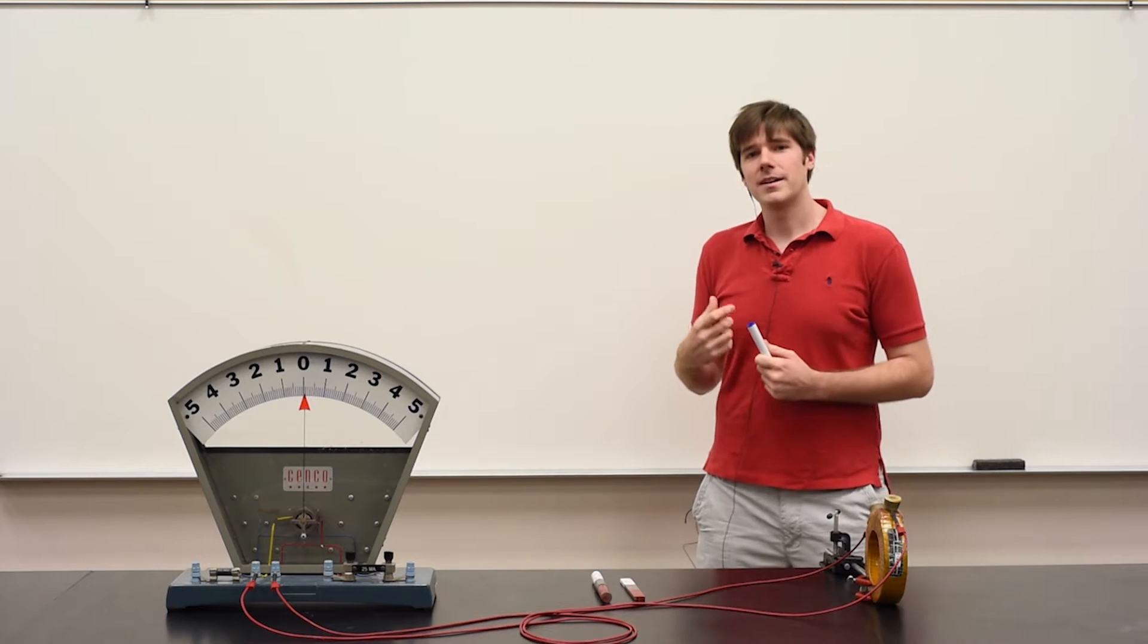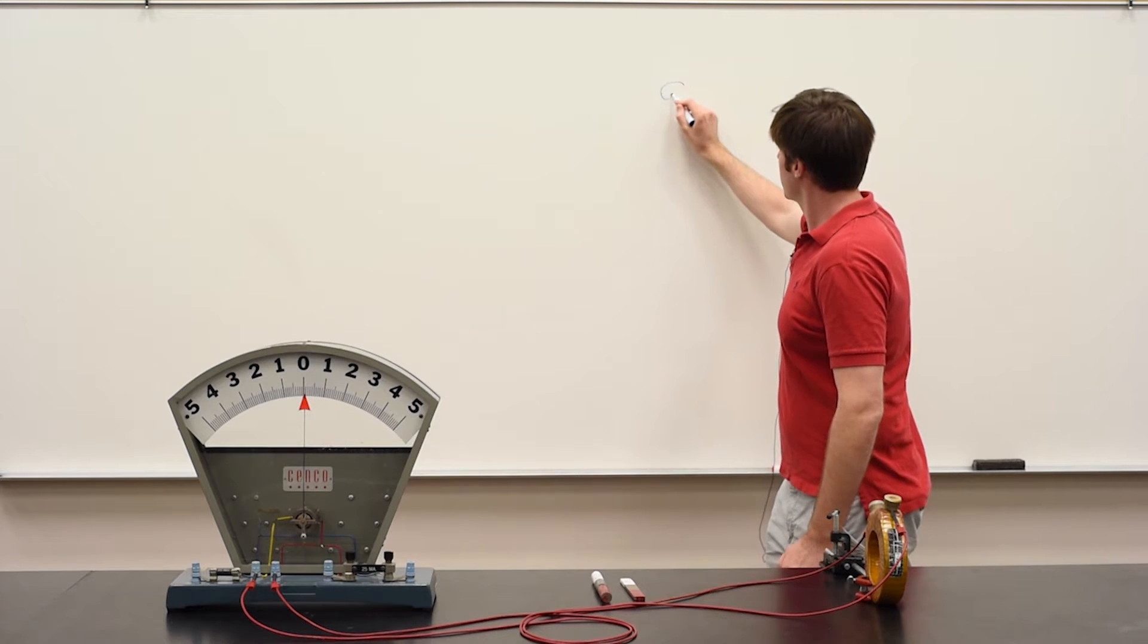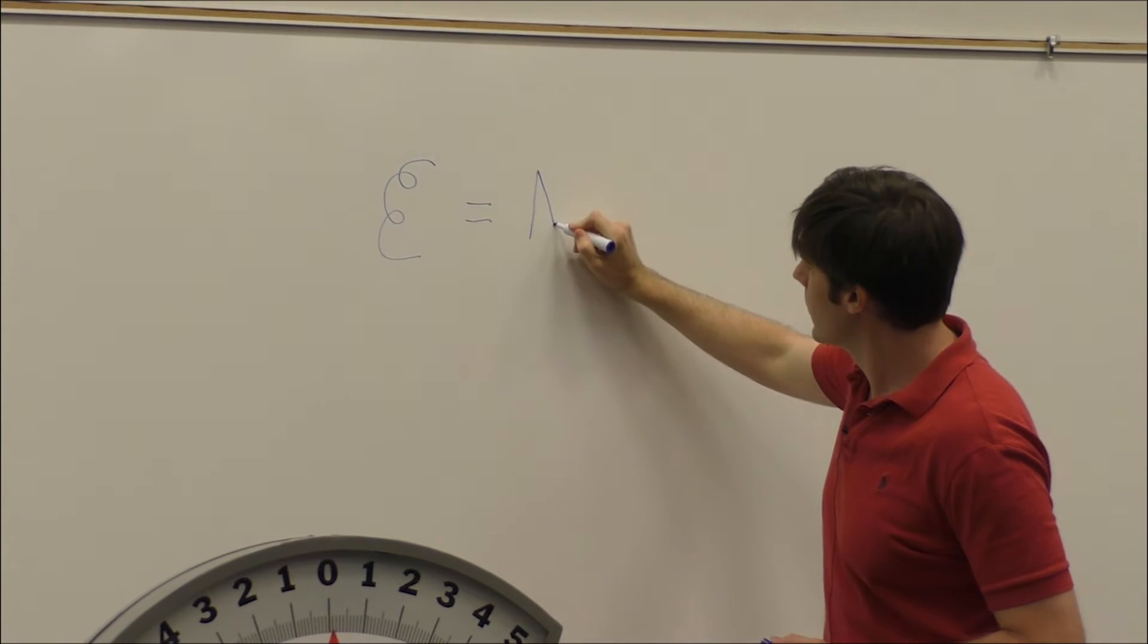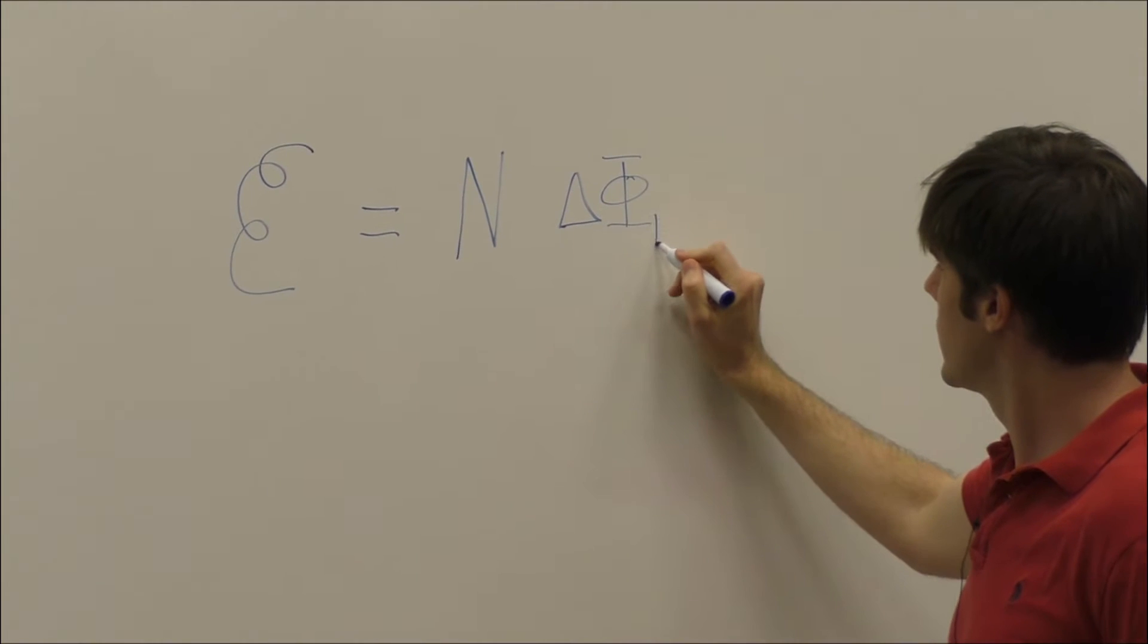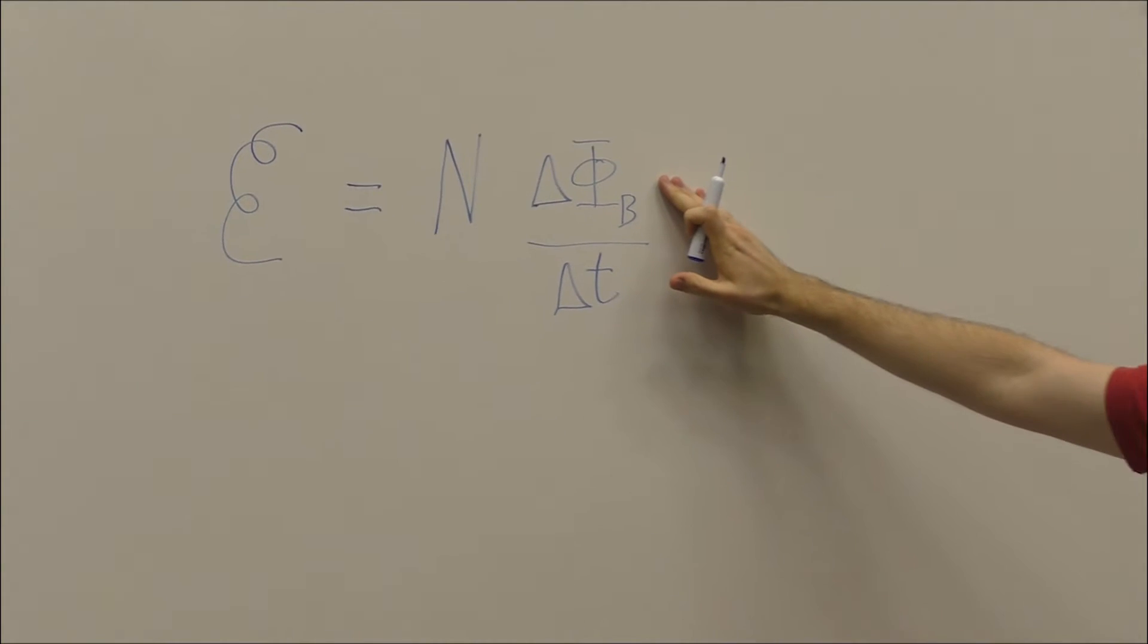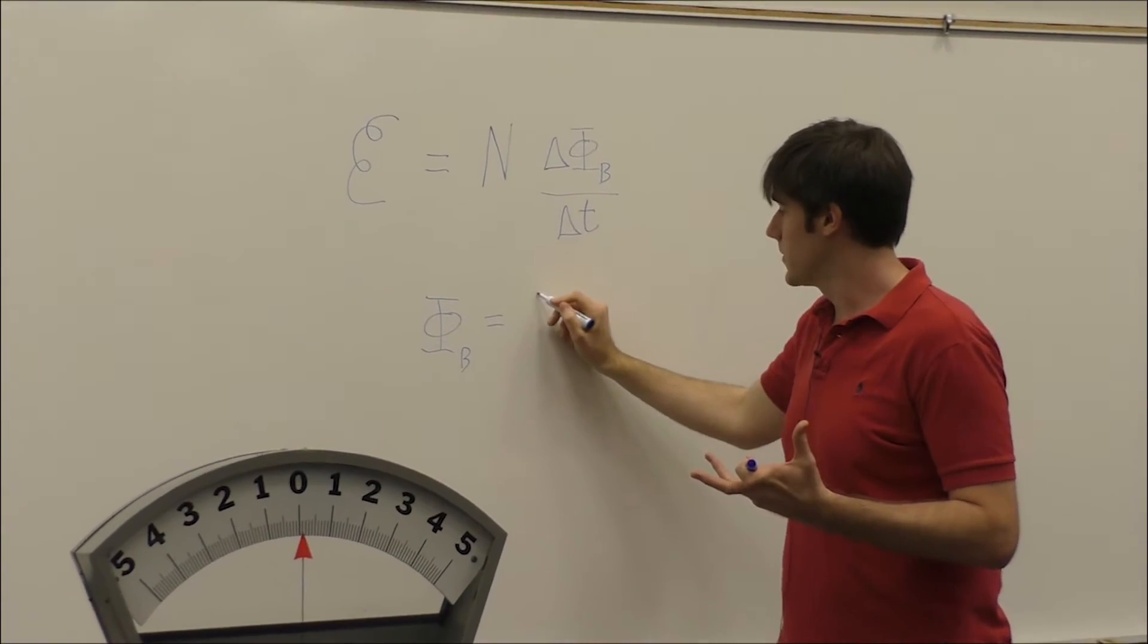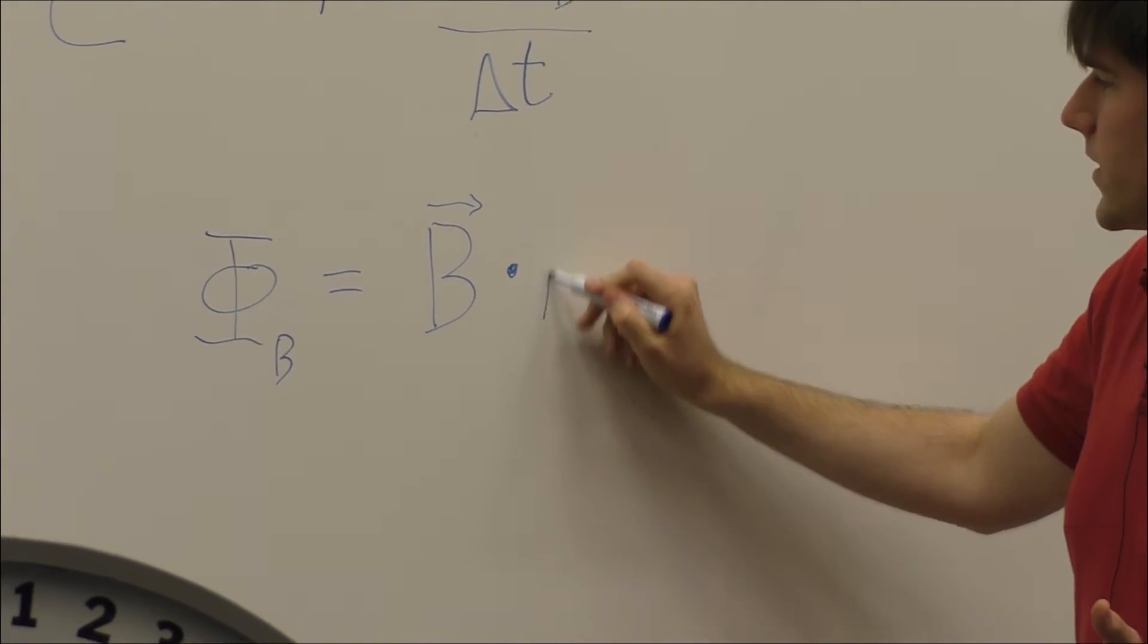Faraday's law tells us how a magnetic field induces a voltage, and it does so in this equation. We have an induced voltage, which we call the EMF voltage, which is equal to the number of coils times the change of magnetic flux over time. And the magnetic flux is equal to the strength of the magnetic field dotted with the cross-sectional area of the coils.